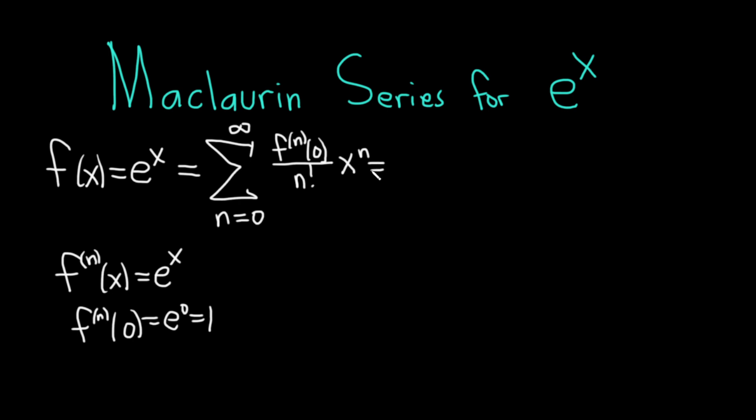So this is just 1. So this is the infinite sum as n runs from 0 to infinity and this whole thing here is 1. So you just get 1 over n factorial x to the n. This is the infinite sum as n runs from 0 to infinity of x to the n over n factorial.